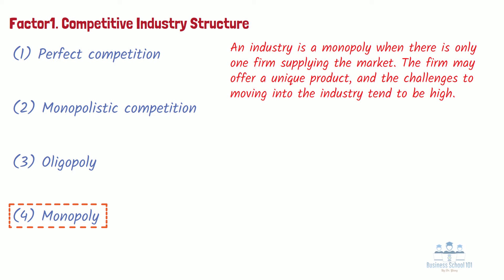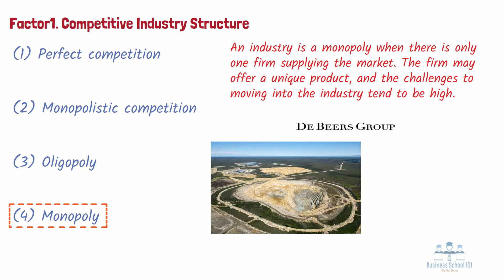A classic example of a monopoly based on resource control is De Beers. De Beers Consolidated Mines were founded in 1888 in South Africa as an amalgamation of a number of individual diamond mining operations.